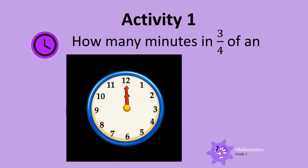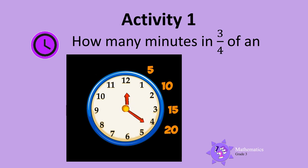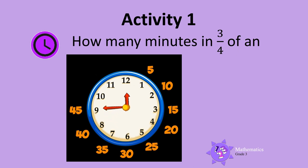How many minutes are in three quarters of an hour? The long arm must go three quarters of the way around the clock — from here to here. Let's count how many minutes: 5, 10, 15, 20, 25, 30, 35, 40, 45. So there are 45 minutes in three quarters of an hour.